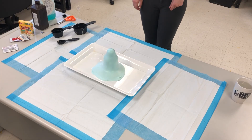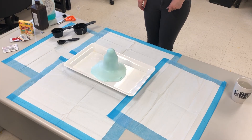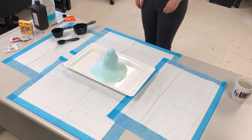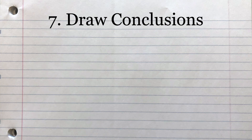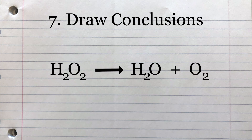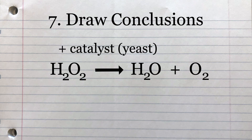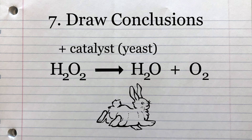The yeast as a catalyst did help speed up the reaction process. Based on the results from our research and experiment, we can conclude that yeast as a catalyst does indeed help speed up the breakdown of hydrogen peroxide into water and oxygen gas.